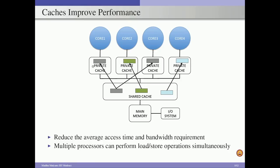With private caches and shared caches, multiple cores can perform load/store operations simultaneously. A core can send a request serviced by its private cache without going to the shared cache. The shared cache, if it supports multiple ports, can also service multiple requests simultaneously, as long as those requests are not conflicting on the same address.